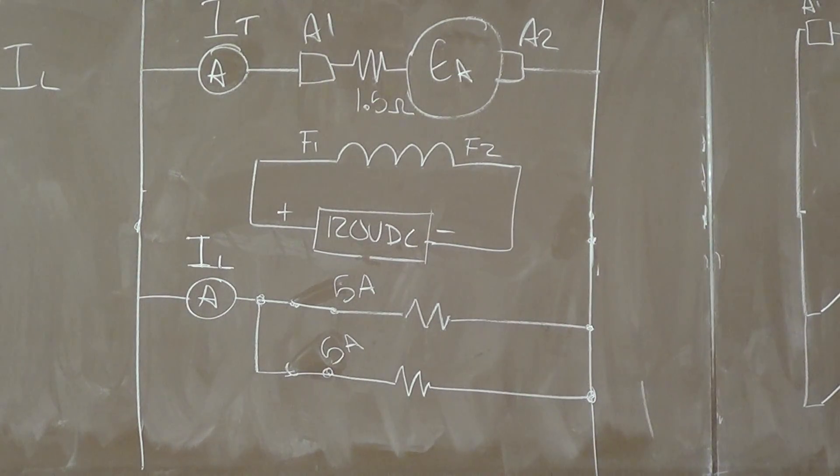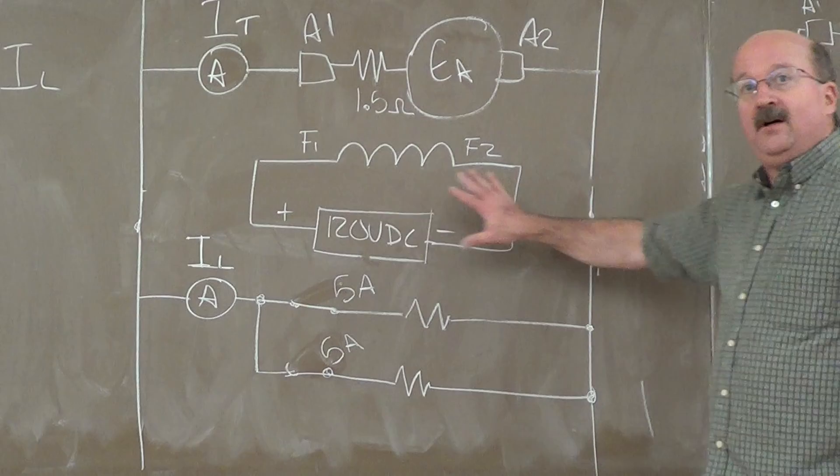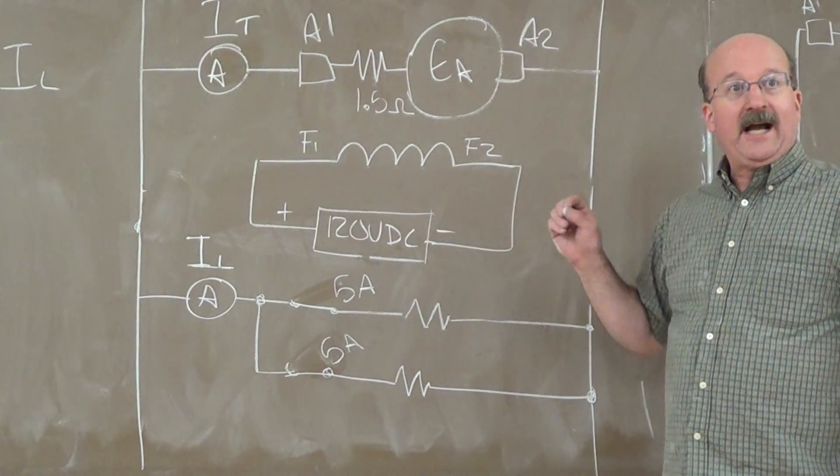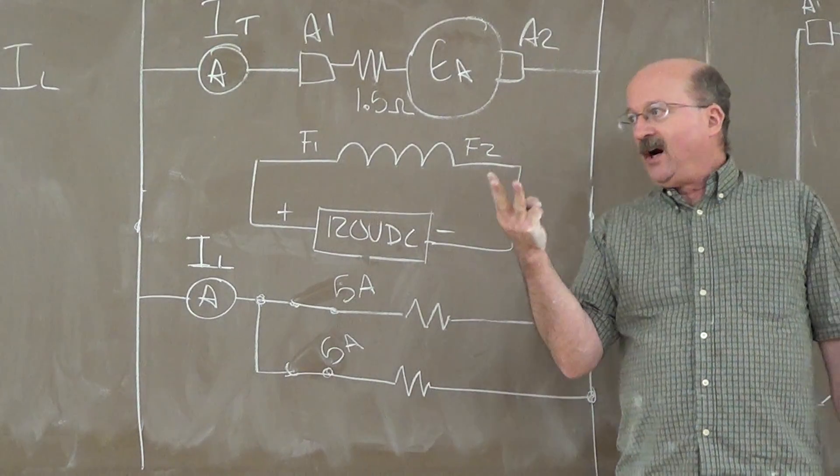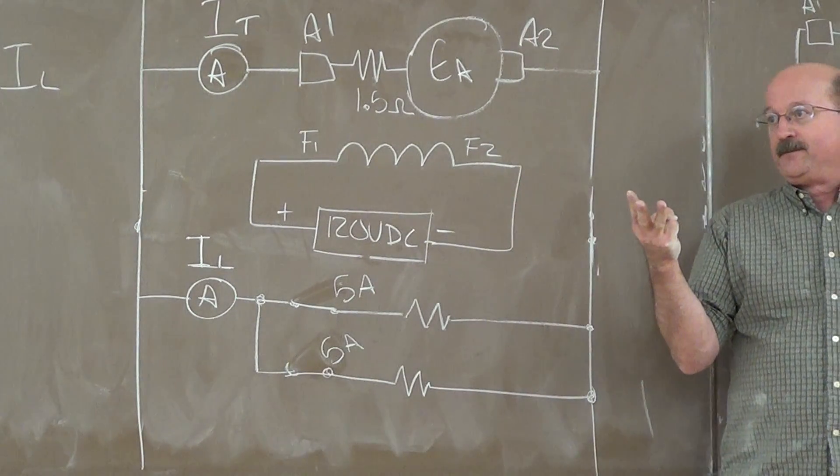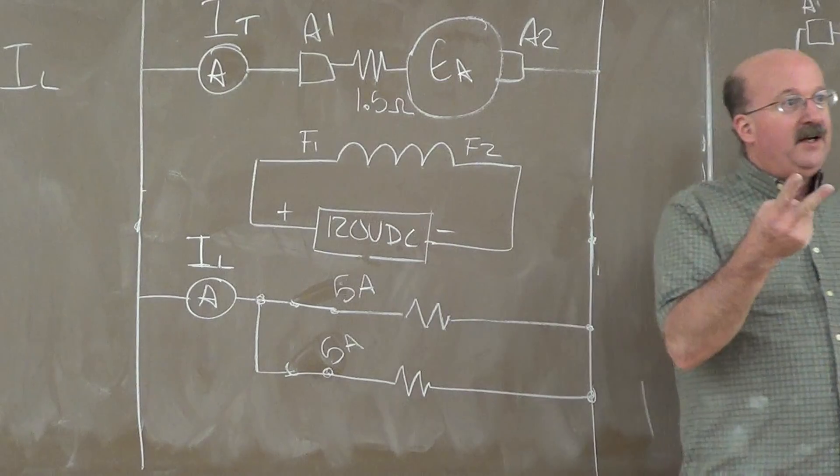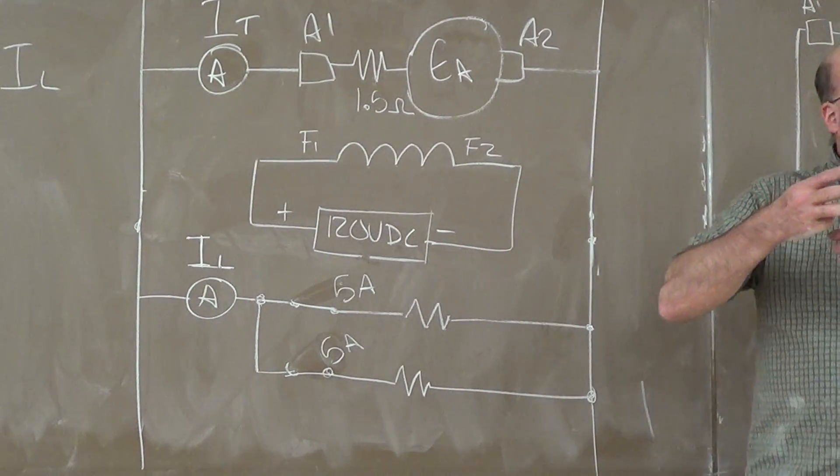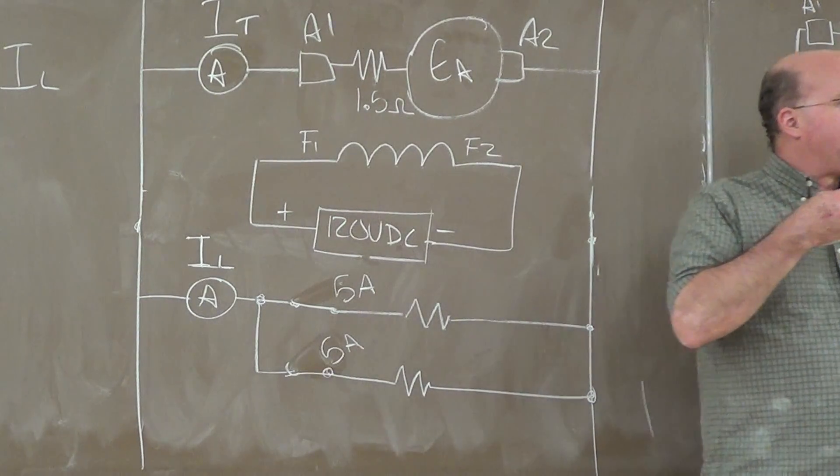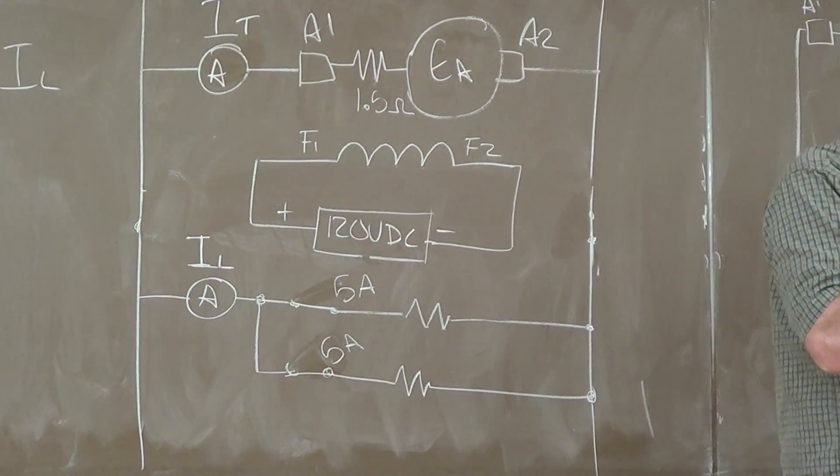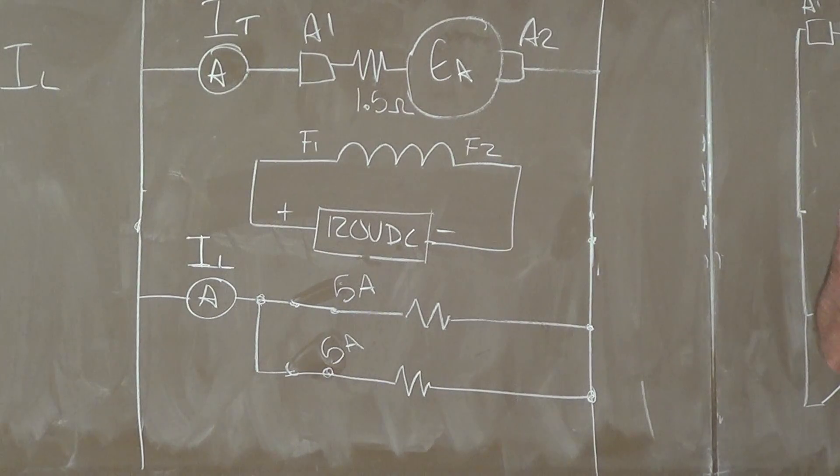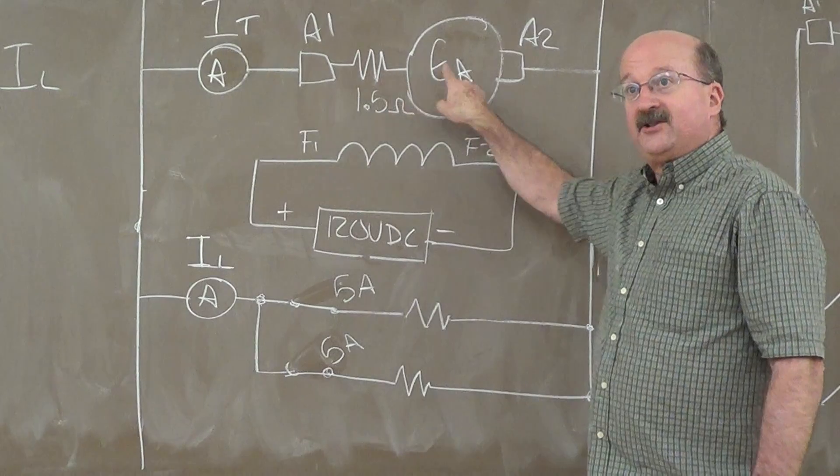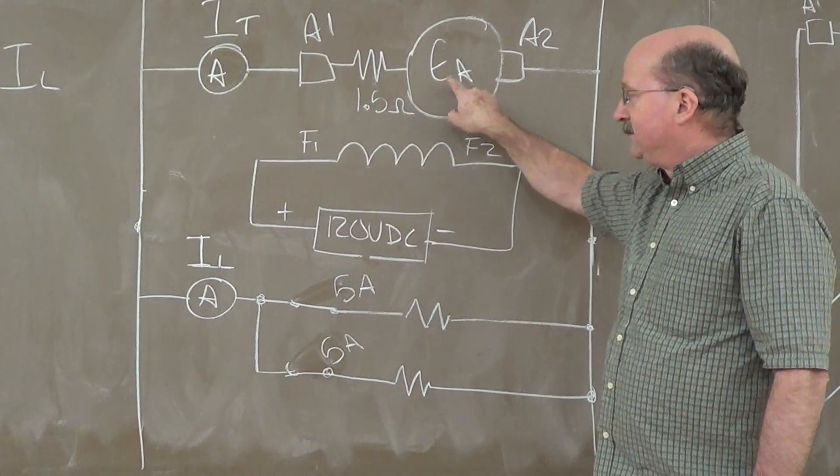So what happens when we looked at the output mode, the mode chart of volts over amps on this type of generator, we had three losses with the self-excited, right? Armature reaction, the IR drop, and the loss of magnetism. You just got rid of one of those. The loss of magnetism. So now we just have our armature reaction and our IR drop. IR drop isn't going away, is it? No. That's still inside our armature.